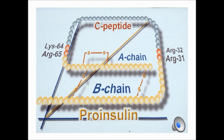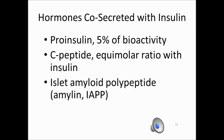Insulin is not produced as the final product — it is synthesized as pro-insulin, and pro-insulin is cleaved at two sites, at the lysine-arginine and arginine-arginine sites, into C-peptide and insulin. The insulin molecule consists of two chains, an A-chain or alpha chain and a B-chain or beta chain, and those chains are connected and held together by disulfide bridges. The hormones co-secreted with insulin from the secretory granules are pro-insulin, C-peptide, and amylin.